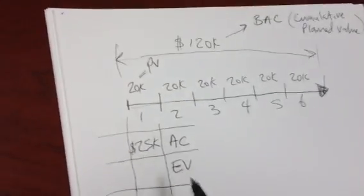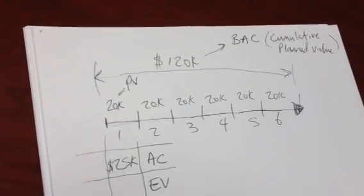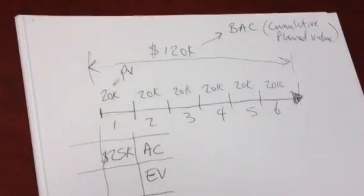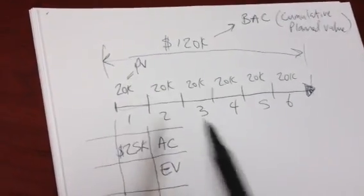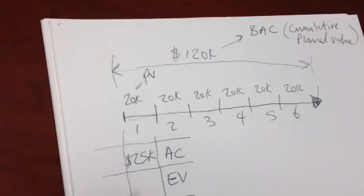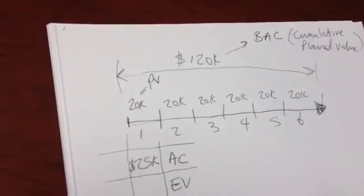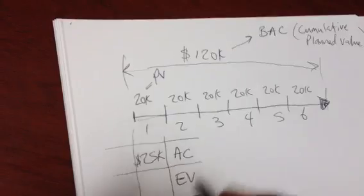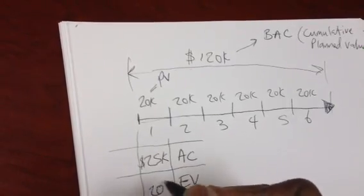Now, the last metric is called earned value. Earned value refers to the budgeted cost of work performed. So, if you got all of the work done in a particular month, let's say you got 100% of the work done, that means your earned value for this month is going to be $20,000.